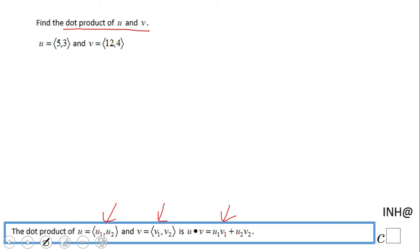We have u equals (5,3) and v equals (12,4). These components are u1, u2, v1, and v2. The dot product u•v is u1 times v1 plus u2 times v2, which is 5 times 12 plus 3 times 4.